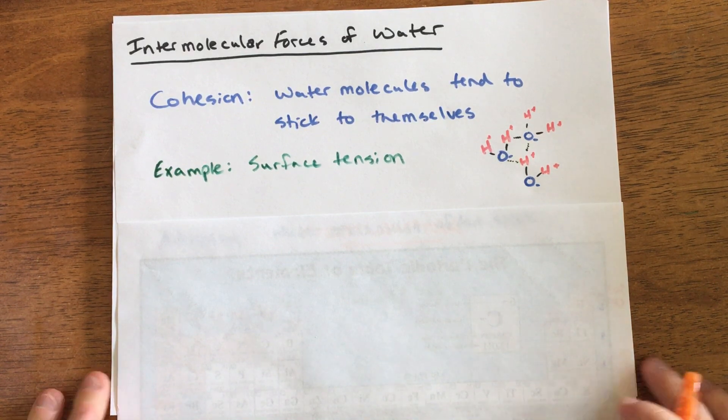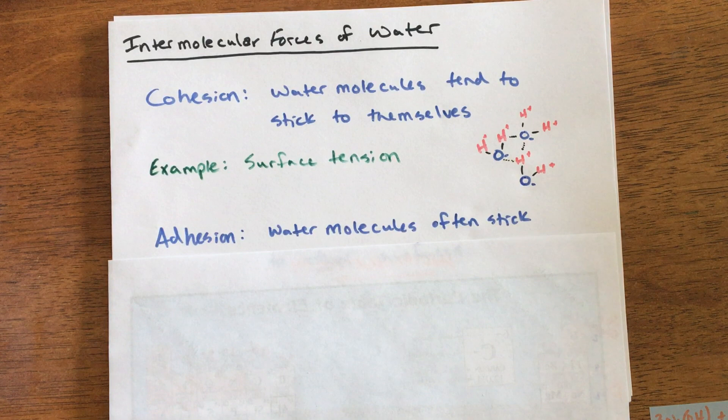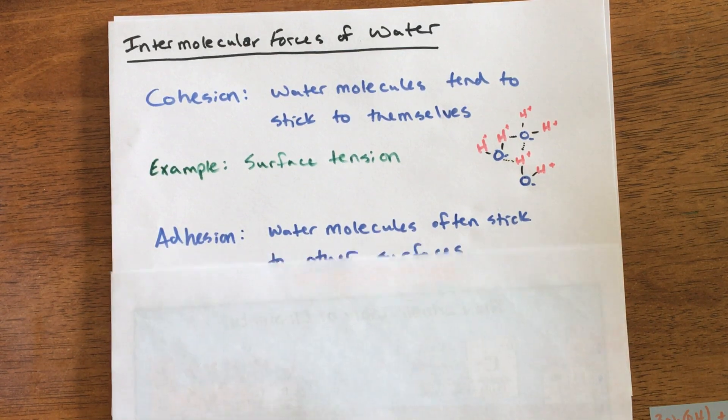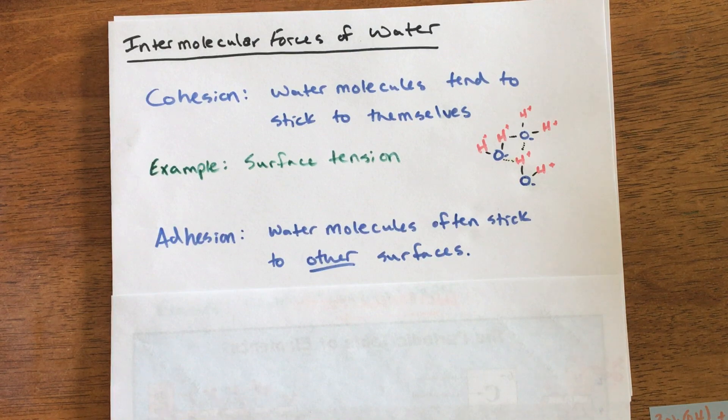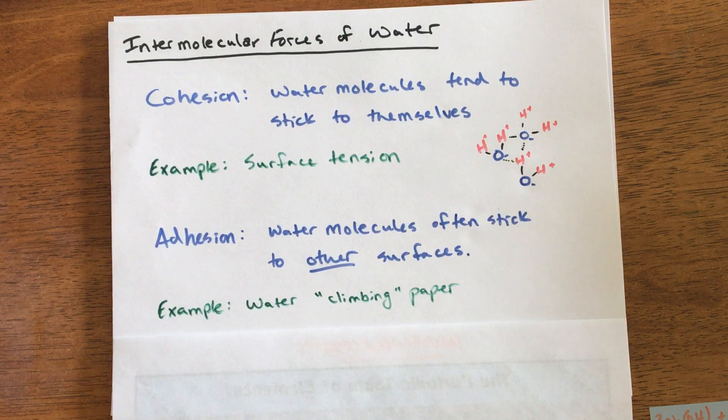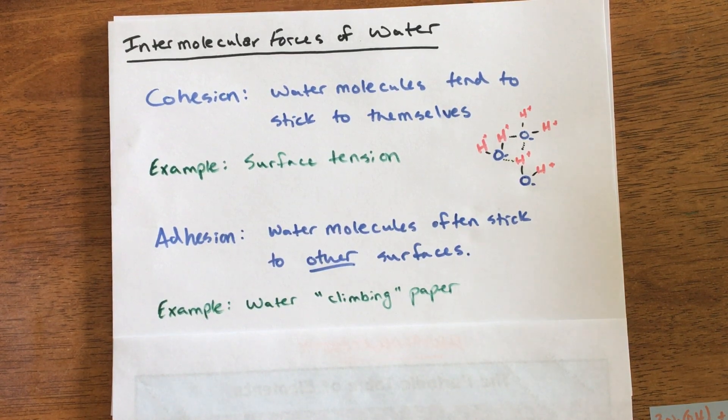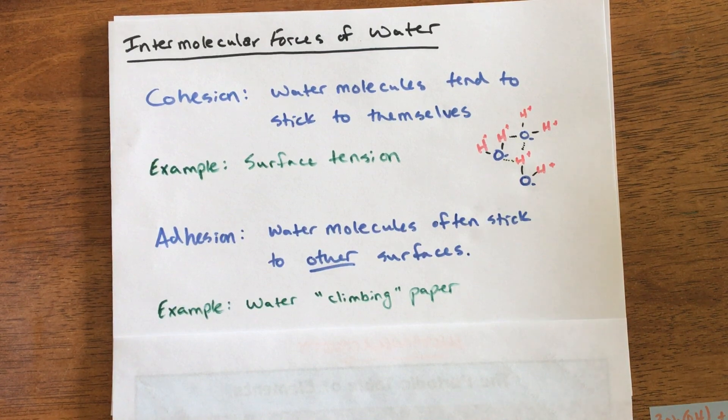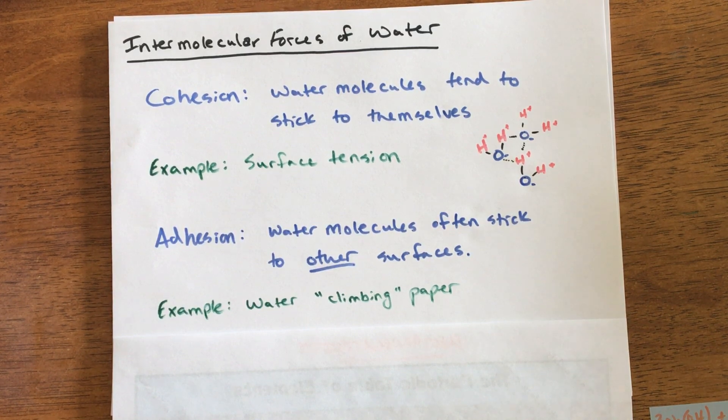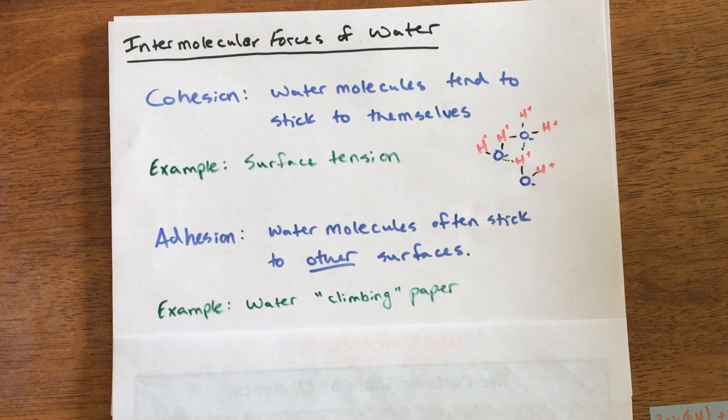The second property is something called adhesion. Instead of cohesion where water molecules stick to each other, adhesion is adhering to something else. This is when water molecules stick to other surfaces, something besides water. Something that's really common is if I take a piece of paper and dip it in water, the water will climb up that paper and spread out throughout the paper. It won't just stay put because it's adhering and pulling itself through that paper. You've maybe experienced this when cleaning up a mess or in some sort of chromatography experiment in science where the water moves up the paper.